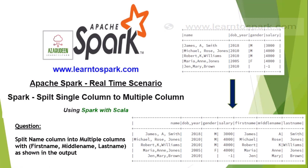Welcome to today's session on Apache Spark. In this episode we will cover a real-time scenario where we need to split a single column into multiple columns. The name column has values separated by commas — first name, middle name, and last name — and the requirement is to split this name column into three separate columns based on comma.